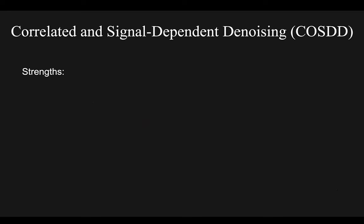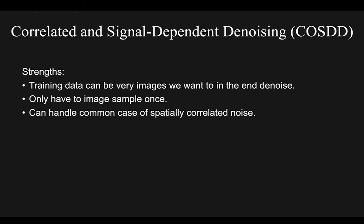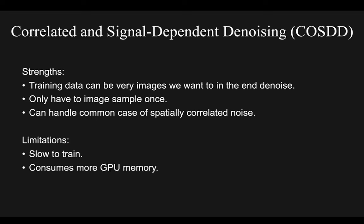COSD's key strengths: training images can be the images you'd like to ultimately denoise, since you only image once. It can handle the very common case of spatially correlated noise in row or column directions. The limitations are that it's a much slower training process — taking many hours more — and it consumes a lot more GPU memory, requiring a much higher VRAM GPU.